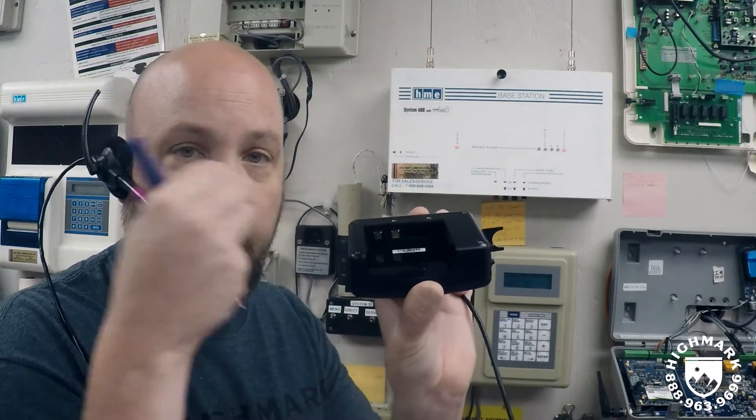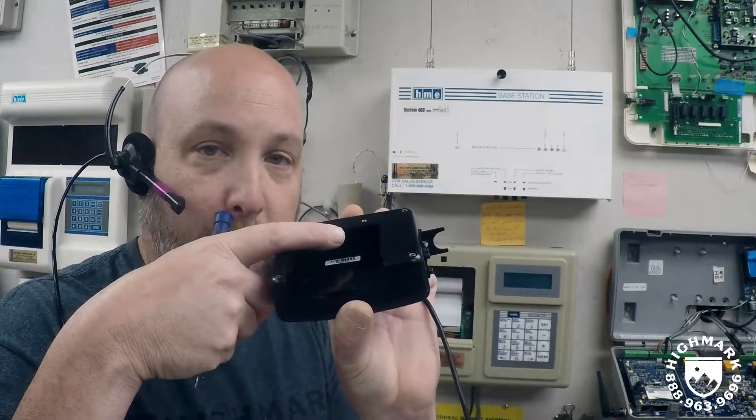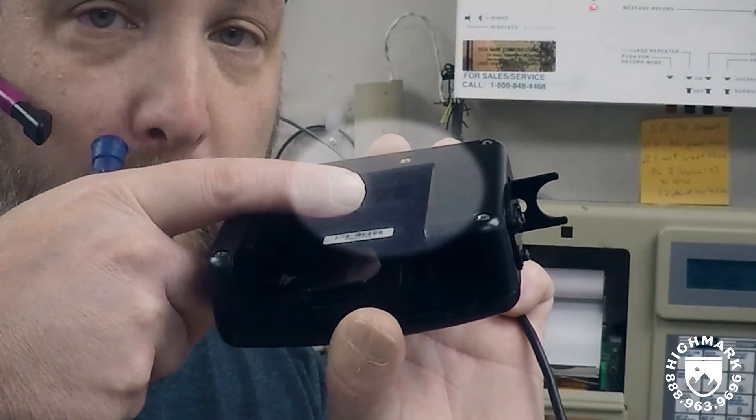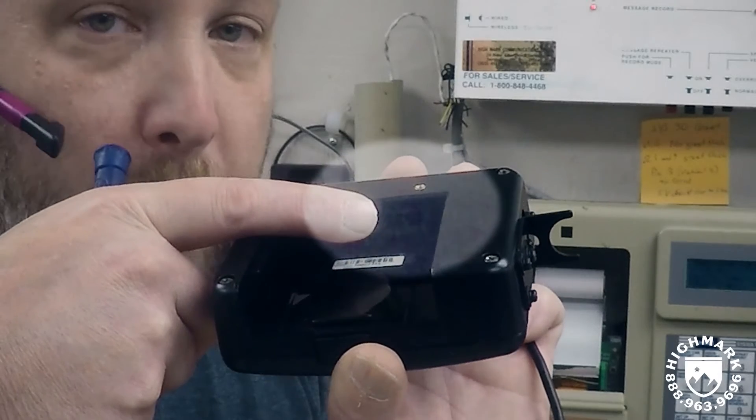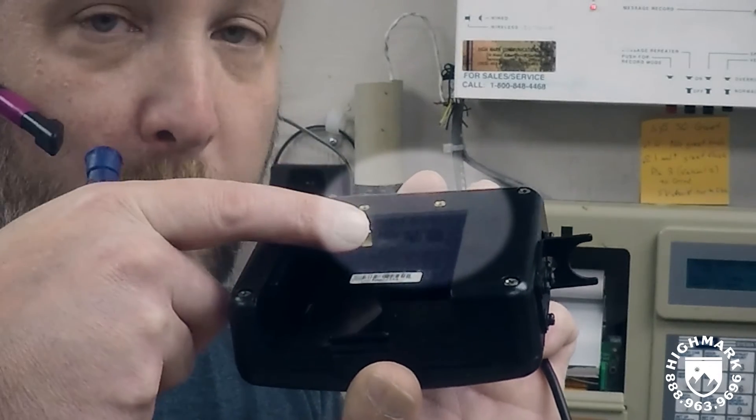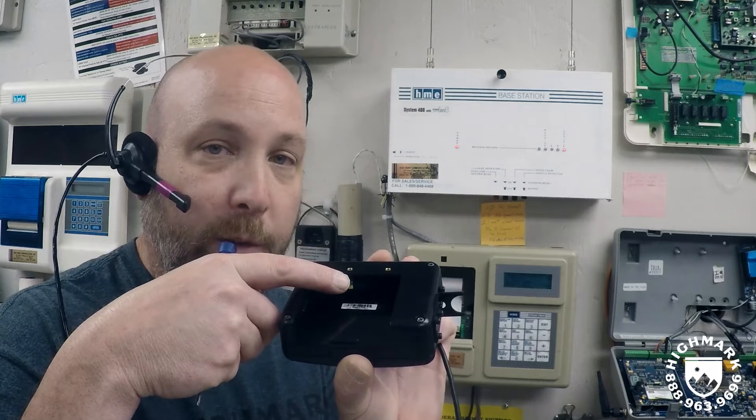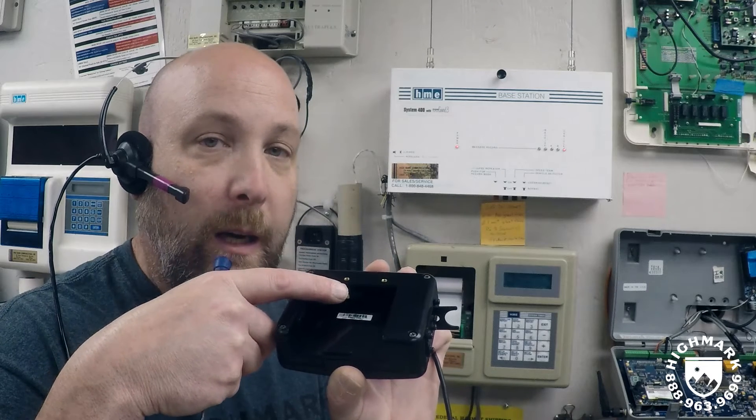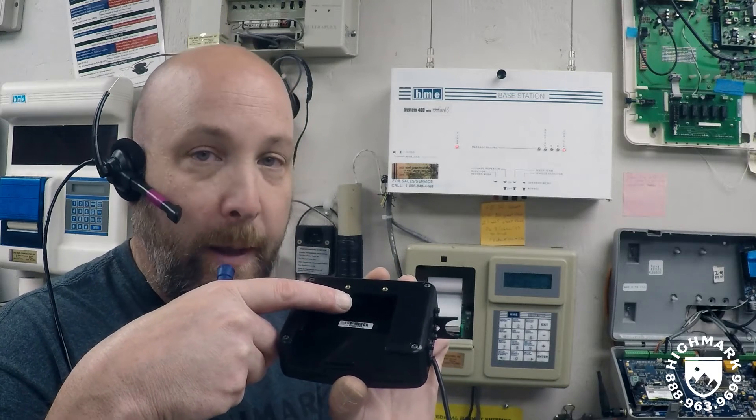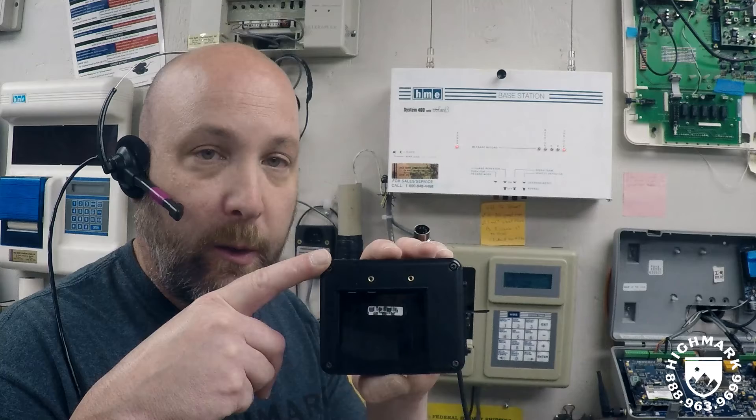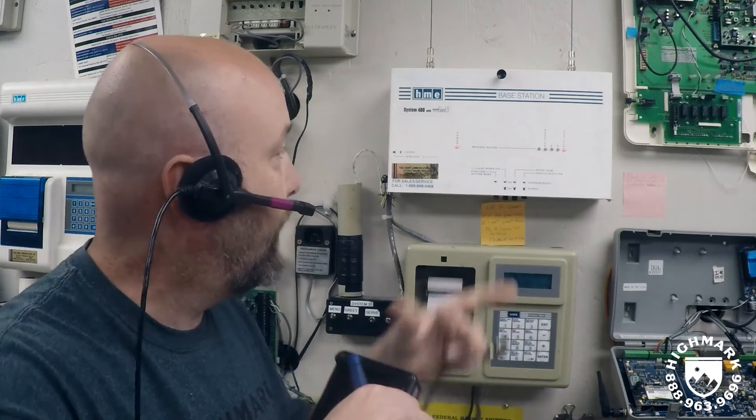I know this may be hard to see on camera here, but there's a bank of little dip switches in there. You may need a bright light and possibly a pen to flip the switches up and down. You simply flip the switches into the same configuration as the comm that is currently working. That will put this particular comm on the correct frequency to operate with the base station.